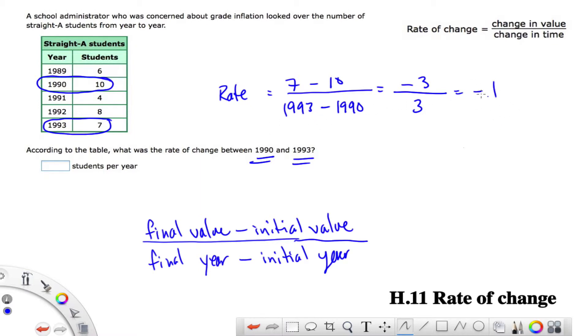So minus 1. So we have a rate of change of minus 1 student per year. So notice, this is 7 minus 10 students. And this is 1993 minus 1990. So this is in years. So students per year. So again, this per is sort of like our division sign. Students per year. For every year, we went down 1 student. That is your basic rate of change.